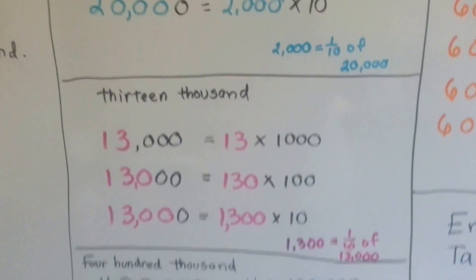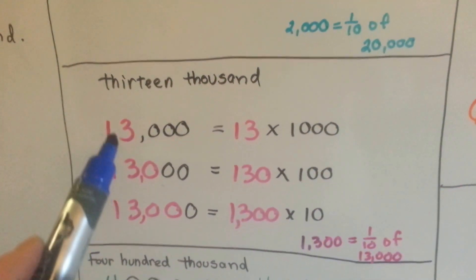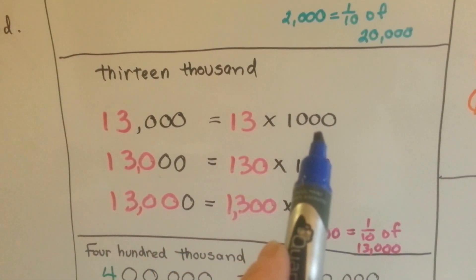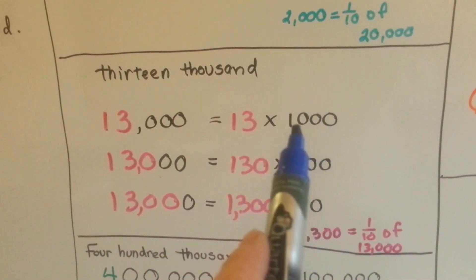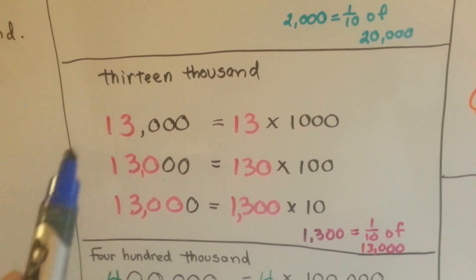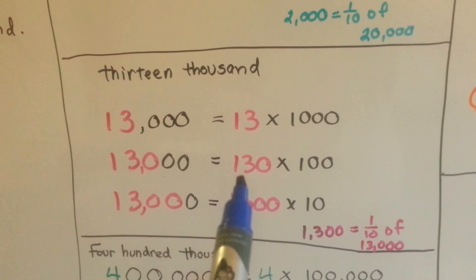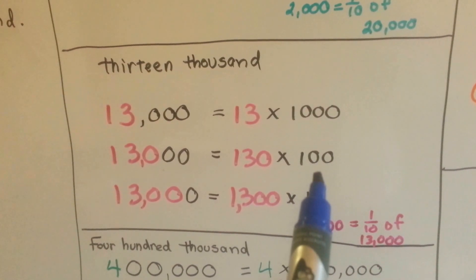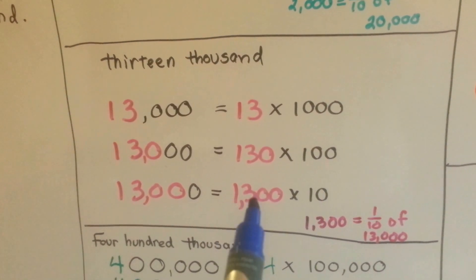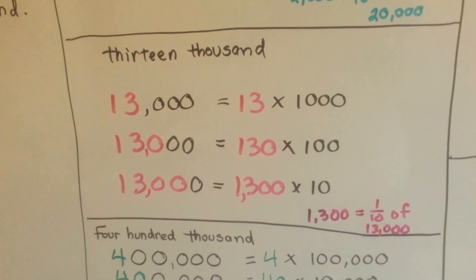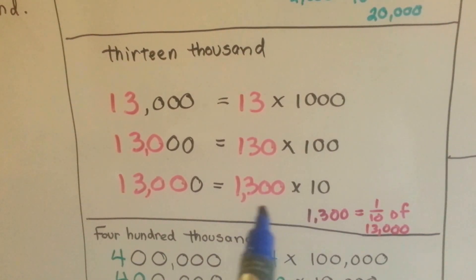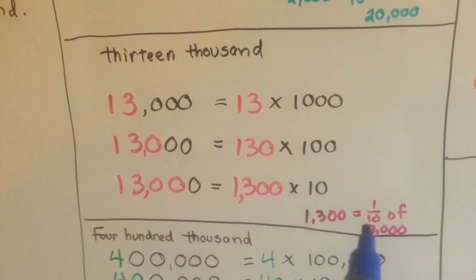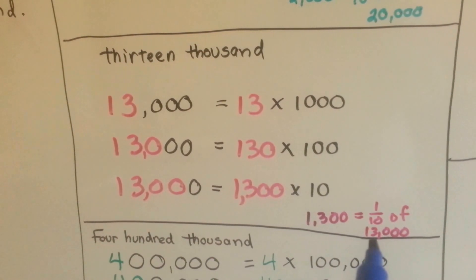Let's look at thirteen thousand. Thirteen thousand can be thought of as thirteen thousands. If we had a thousand thirteen times, we'd have thirteen thousand. We can also look at it as one hundred thirty one-hundreds, or one thousand three hundred tens. That tells us that one thousand three hundred is one tenth of thirteen thousand.